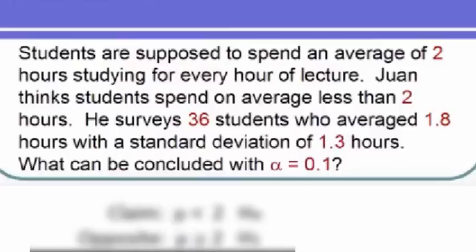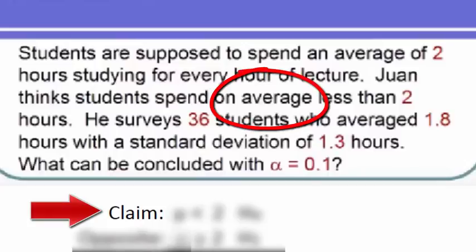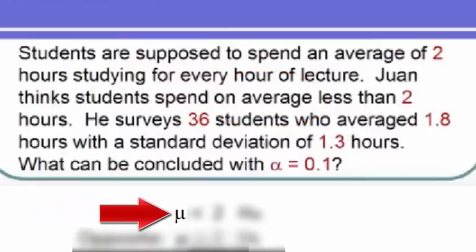And going through the first four steps of hypothesis testing, setting up the hypothesis test, we first write the word claim, then we write the claim in symbolic form. Since this claim deals with an average, we use the Greek letter mu. Juan's claim is that students spend less than two hours, so our claim symbolically will be μ < 2.